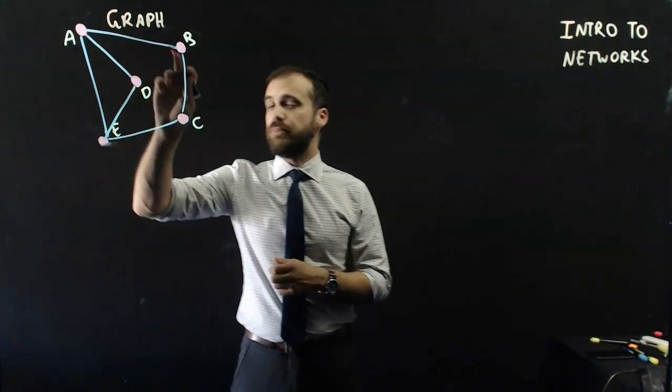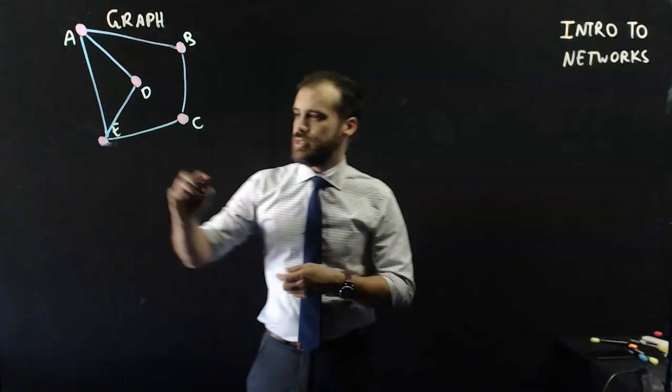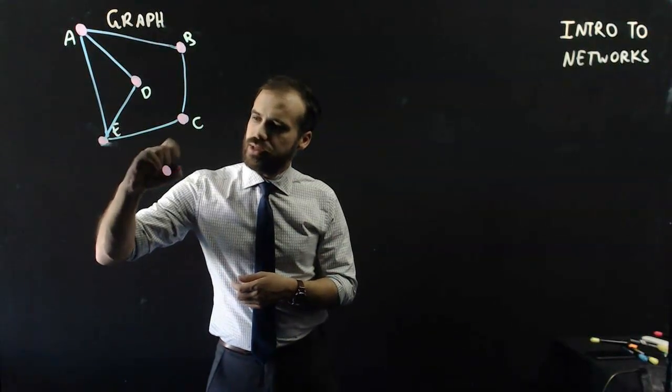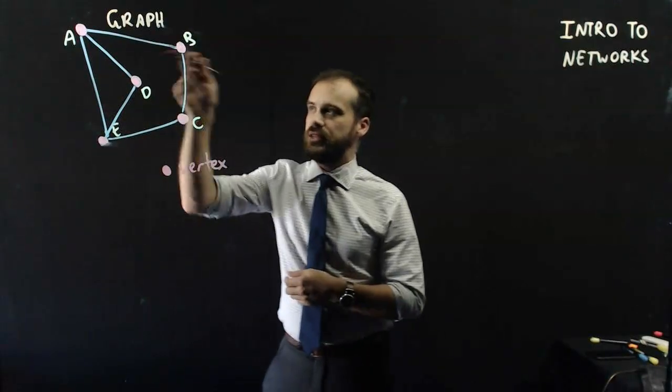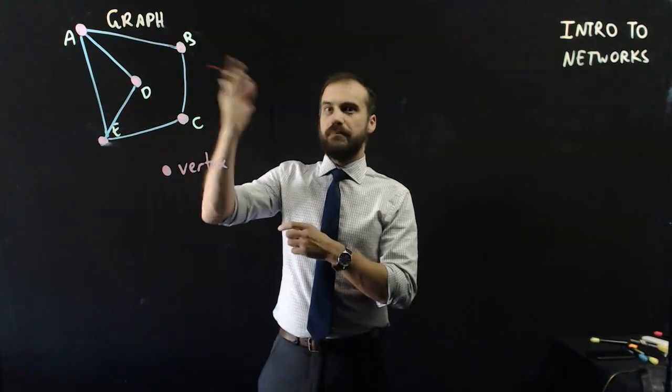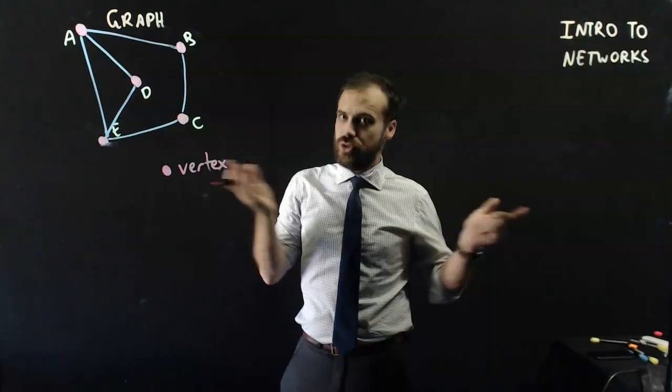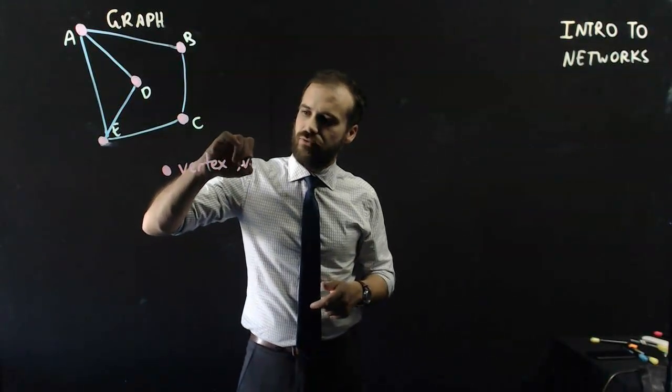Now next up, we're going to talk about each of these points, whether they're towns or friends. Each one of those points is called a vertex. So this is vertex A, and that's vertex B. If you want to talk about multiple vertexes, you don't say that, you say vertices.